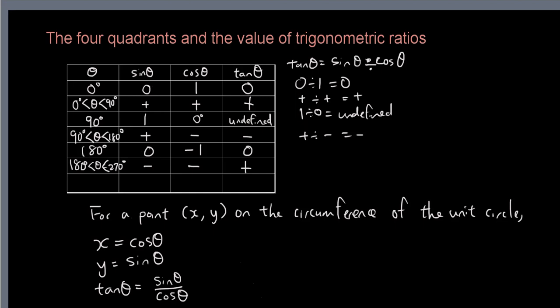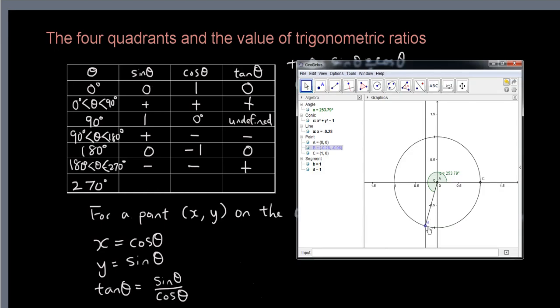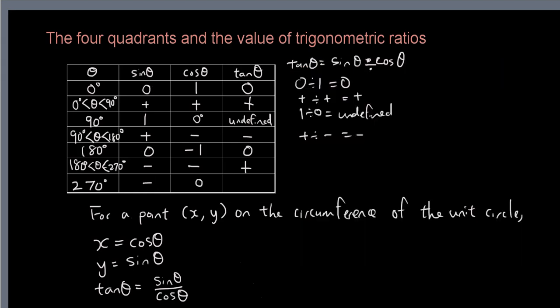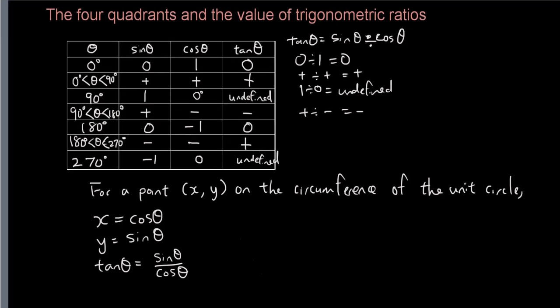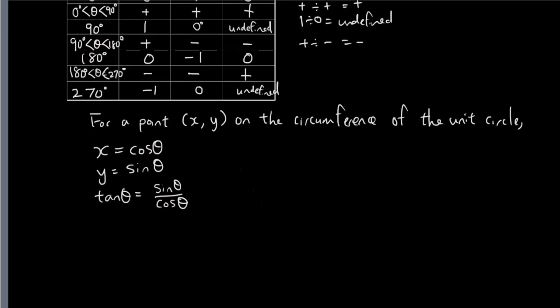Now let's try another one: 270 degrees. At this point, horizontally it's 0, vertically it's negative 1. So we have 0 and negative 1. Again, undefined.